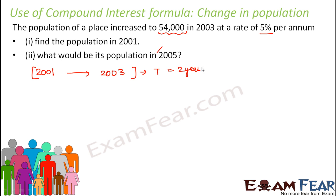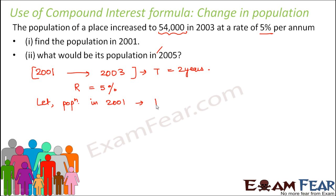In a period of these 2 years, the population has changed. As per the problem, the population has increased basically, at the rate of 5% per annum — that means annually, the population has increased by 5%. So we have to find out the population in 2001. Let us assume that the population in 2001 is P. We already know the population in 2003.